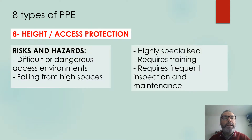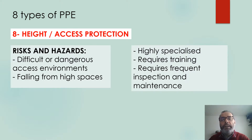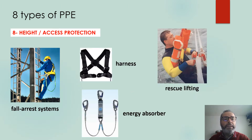The last type of PPE is height or access protection. The risk is related to the difficulty or danger of access to certain environments or places, and also the risk of falling from high spaces or high levels. These systems are normally highly specialized, require some training for workers, and also require inspection and maintenance. Examples include fall arrest systems that may include harnesses, energy absorbers, or rescue lifting.